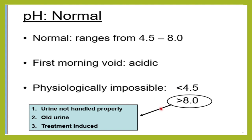If the urine pH is more than 8, a few causes could be that the urine was not stored properly, or the urine analysis has been pending for a long time and was not handled properly, or certain treatments can cause the pH to be more than 8. Otherwise, the normal range of urine is between 4.5 to 8.